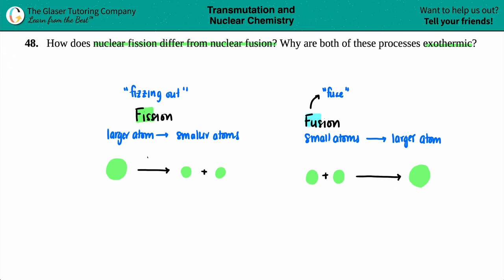Fission has to deal with larger atoms. Think of uranium as probably the most well-known fission atom. And when we think of fusion, we think of the tiny guys. So hydrogen and hydrogen coming together to make helium.